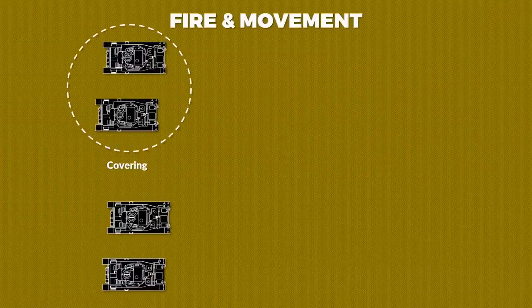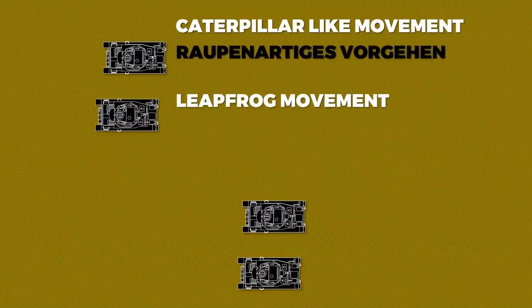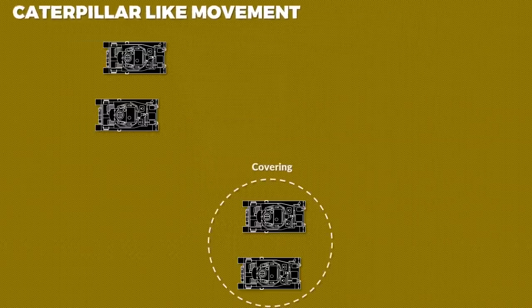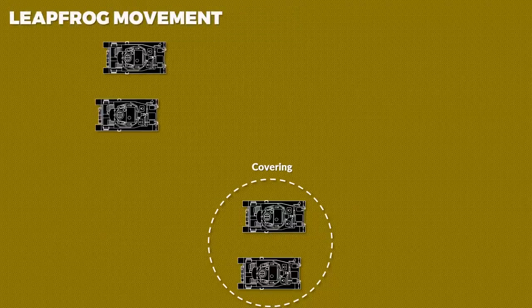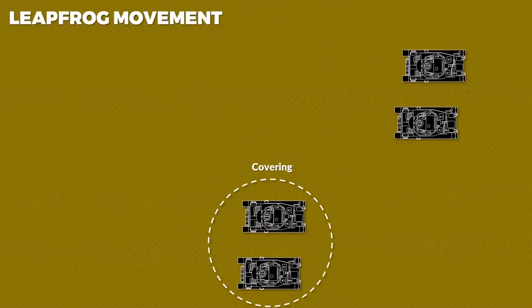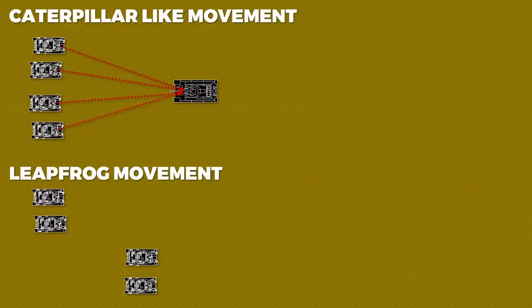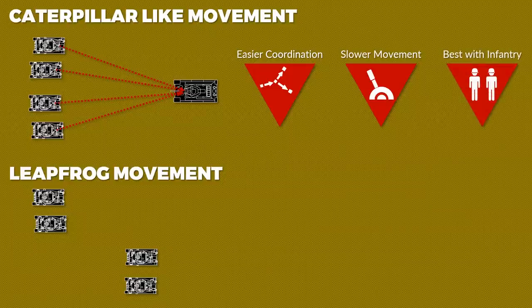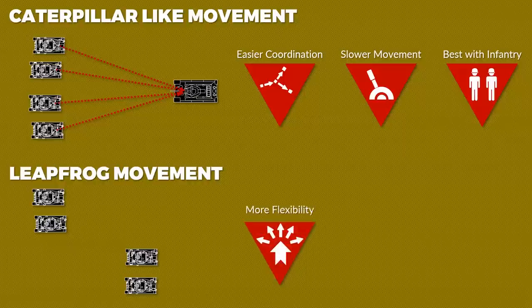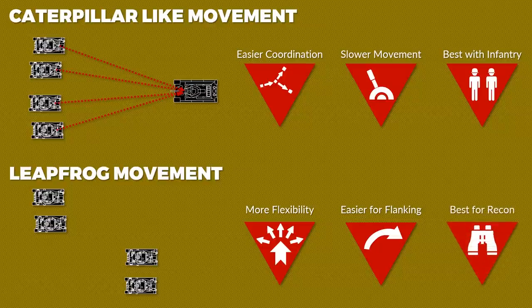One key practice when attacking was using the principle of fire and movement: one part of a unit would watch and cover the other part which was advancing. The first was the caterpillar-like movement — raupenartiges Vorgehen — and the other the leapfrog movement — sprungweises Vorgehen. The caterpillar-like movement is slower and more secure; the group moving forward only moves to the level of the covering group. In contrast, the leapfrog movement leaps ahead of the covering group, thus moving less cautiously. Caterpillar movement allows the unit to unify its fire at times, is easier to coordinate, but is slower and best used in coordination with infantry in difficult terrain. The leapfrog movement is quicker and more flexible, making it easier to flank the enemy, though it is harder to coordinate and best used during reconnaissance and security operations in open terrain.